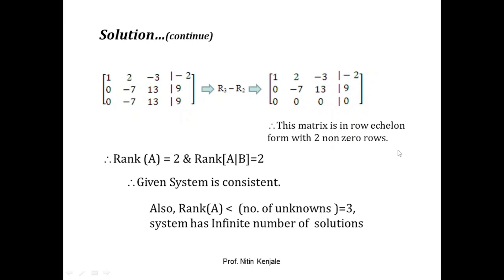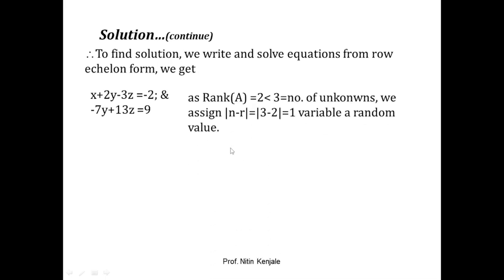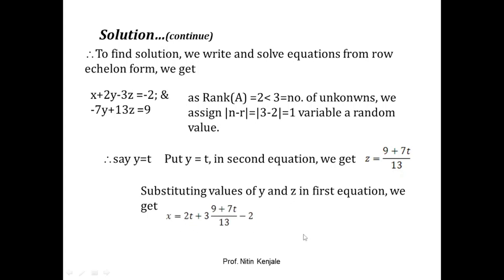Since n minus r = 3 minus 2 = 1, we assign one variable a random value. We write the two equations from the row echelon form. We let y = t and substitute into the second equation to get z = (9 + 70t) / 13. Substituting y = t and this value of z into the first equation gives the corresponding value of x = 2t + 3(9 + 70t)/13 minus 2. You can substitute any value for t to find infinitely many solutions.